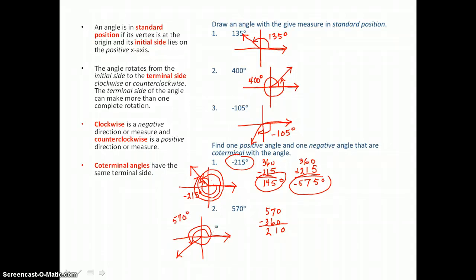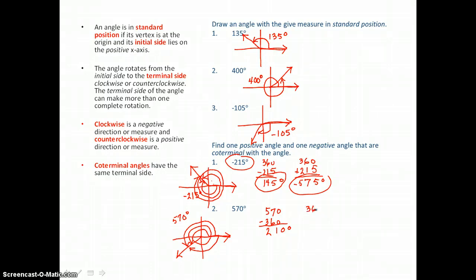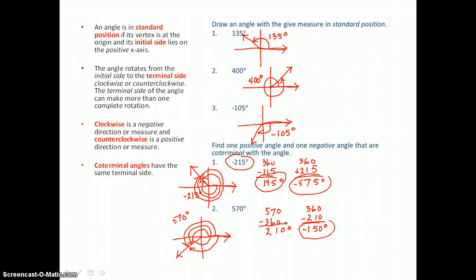To name one positive angle that names that same terminal side, we travel 210 degrees — 180 and 30 more. If we want a negative angle that names that terminal side, we start on the positive x-axis and go in the negative direction, traveling 360 take away that 210, for a total distance of 150 degrees in the negative direction. So here's a negative angle and a positive angle that are both coterminal with the angle we started with.